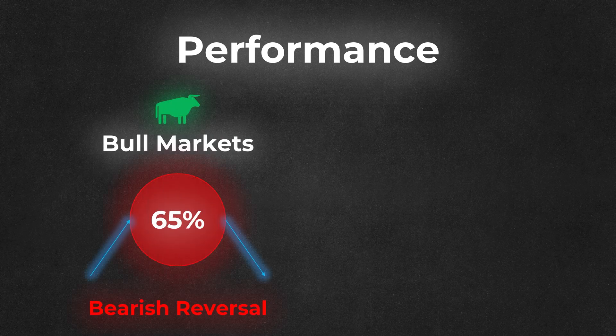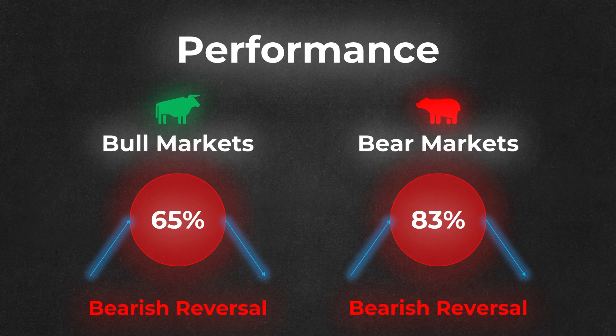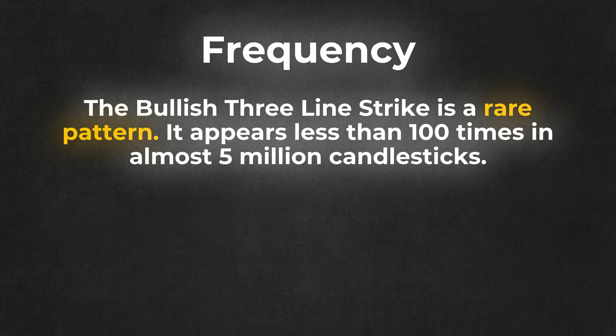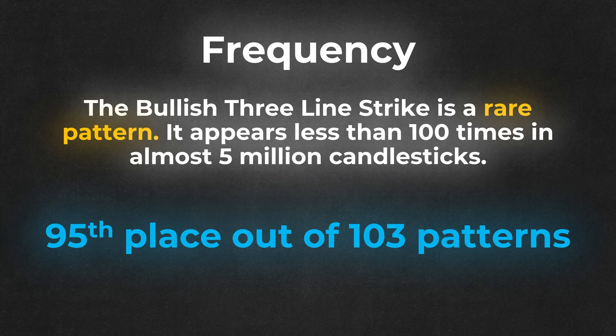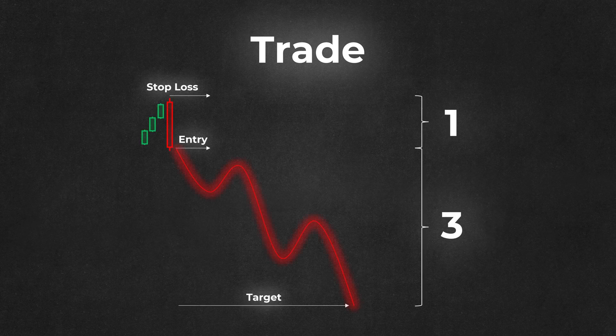The real market data shows that the pattern works in the opposite way it's supposed to. In bull markets, it works as a bearish reversal 65% of the time, and in bear markets, it works as a bearish reversal 83% of the time. The bullish three-line strike is even rarer than the bearish version, placing 95th out of the 103 candle patterns in frequency. A short trade can be triggered at the open of the next candle with a stop above the high of the fourth candle in the pattern and a target three times larger than the stop. The trader must assess if there is leeway for price to reach that target.